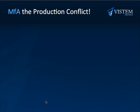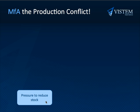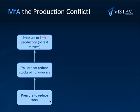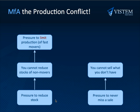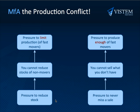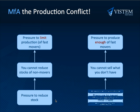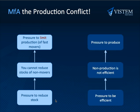The production conflict. On the one hand, factories are under immense pressure to reduce inventory — they must limit production of fast movers, because it is difficult to reduce inventories of slow and non-movers. There is equal pressure to never miss a sale; it is essential to produce enough of the fast movers. At the same time, there is pressure for efficiency. Non-production is not very efficient and often has a negative effect on efficiency measures. The desire to be efficient results in pressure to produce more, and we compromise.